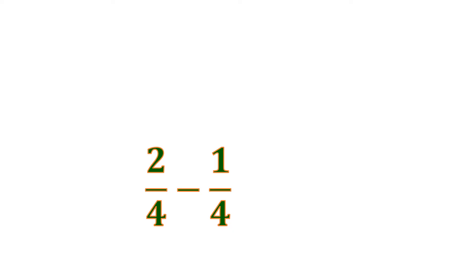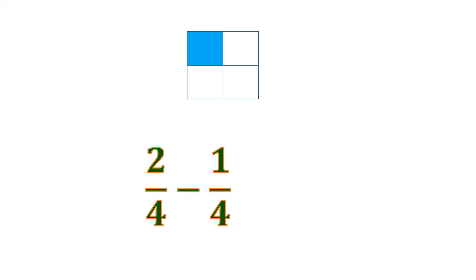Now, let's have subtraction of similar fractions. We have 2 fourths minus 1 fourth. Let us visualize 2 fourths — this is 2 shaded parts out of 4. We want to subtract 1 fourth, so let us remove 1 shaded part out of 4. What we have left is 1 shaded part out of 4, or 1 fourth. The difference between 2 fourths and 1 fourth is 1 fourth.